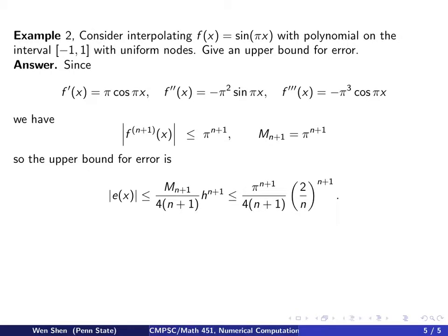Okay, plugging this piece of information back into the error bound we have, that's the error bound, so we will put it in. M will be pi to the power n plus 1, and H will be b minus a over n, where b is 1, and a is negative 1, so b minus a is just 2, so we have 2 over n to the power n plus 1.